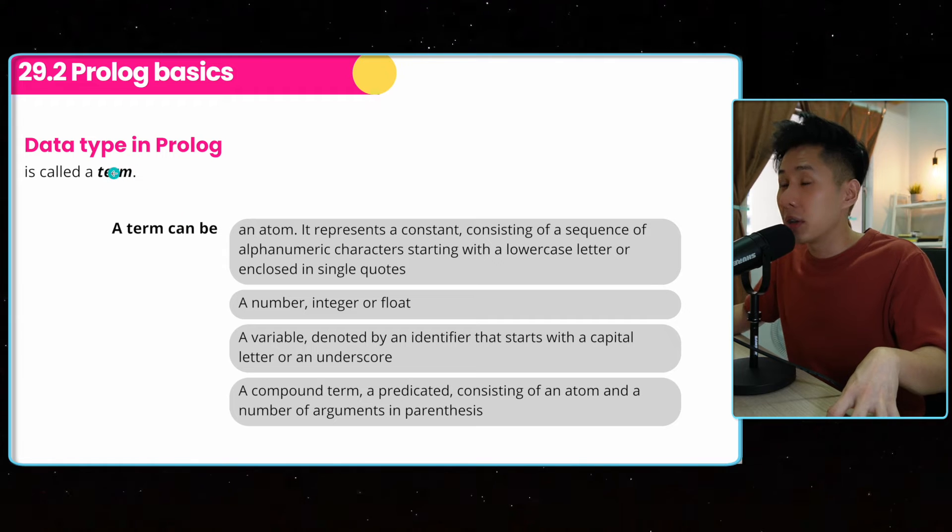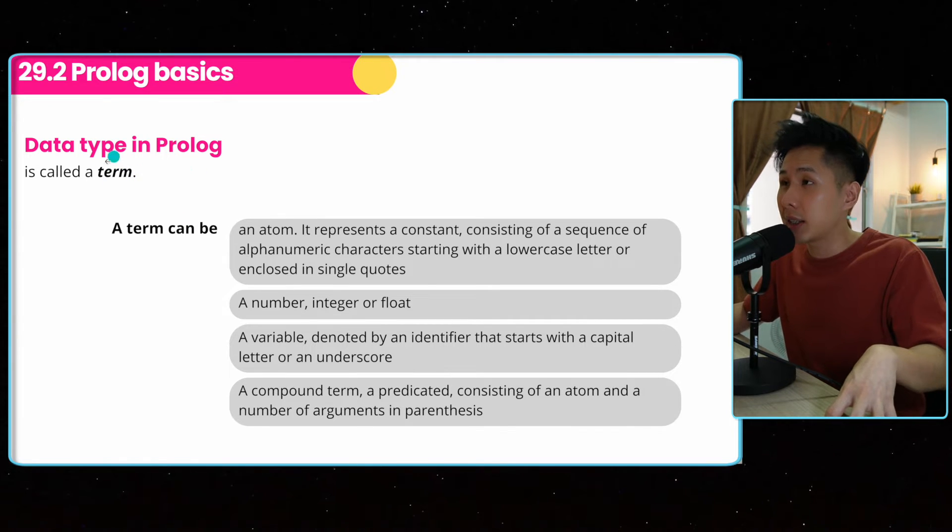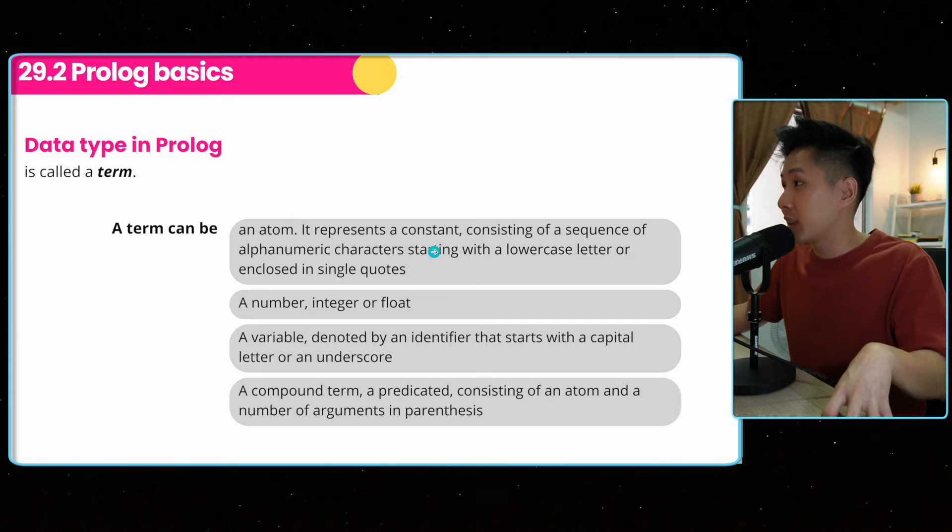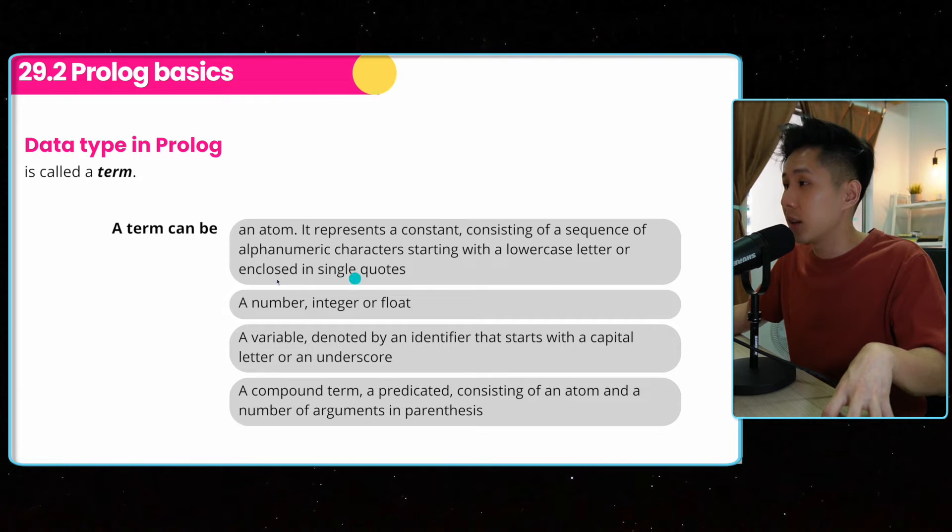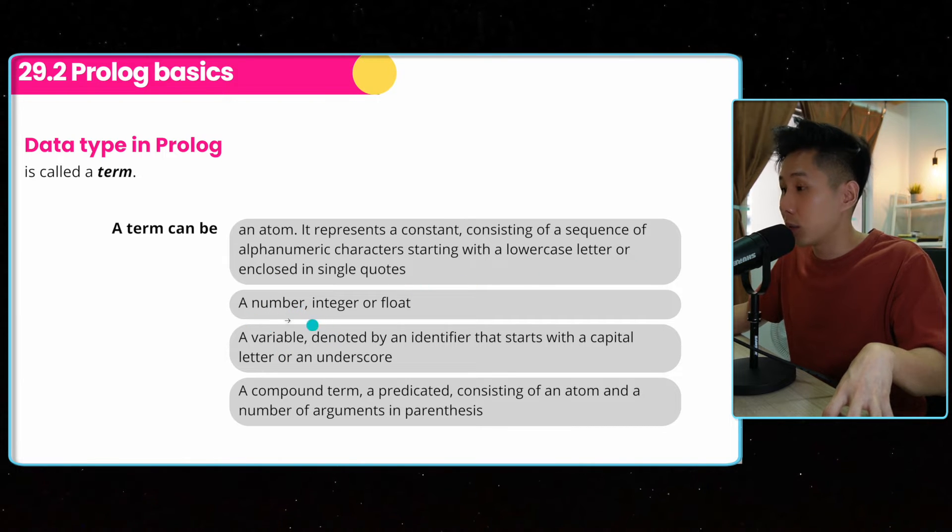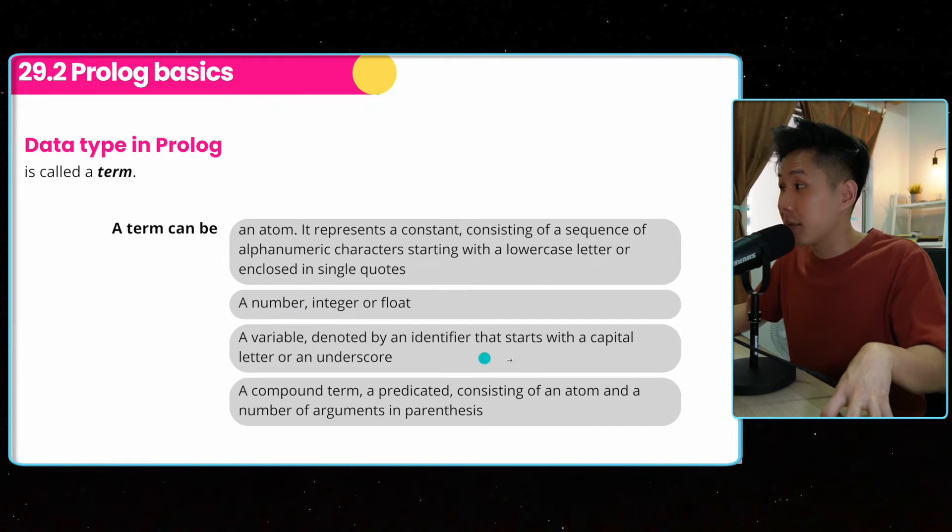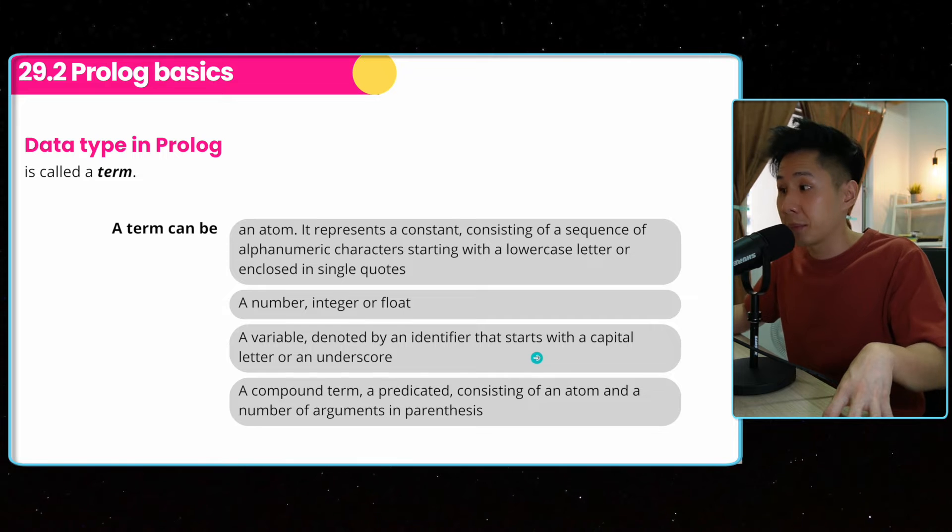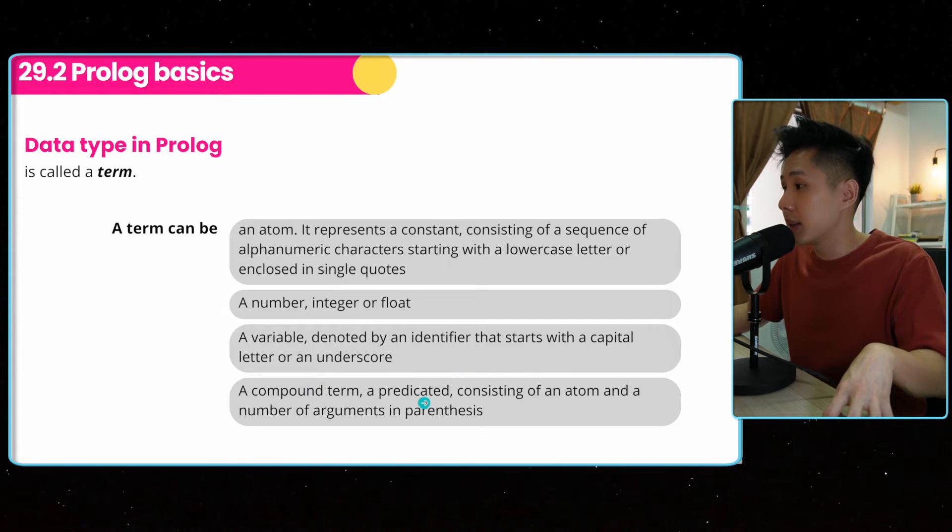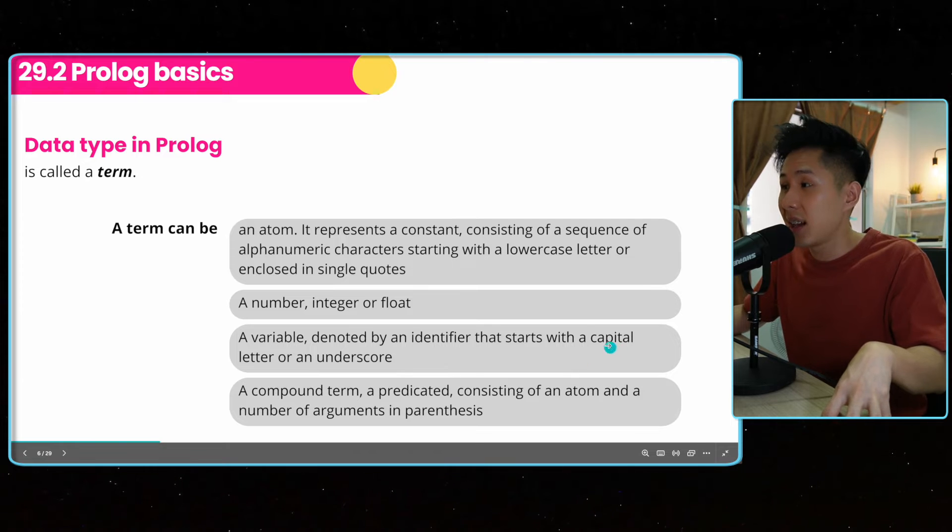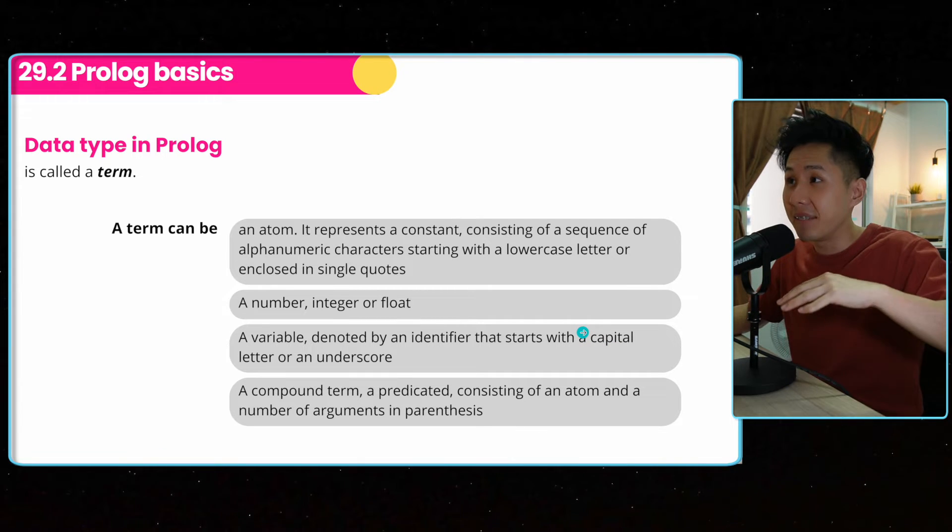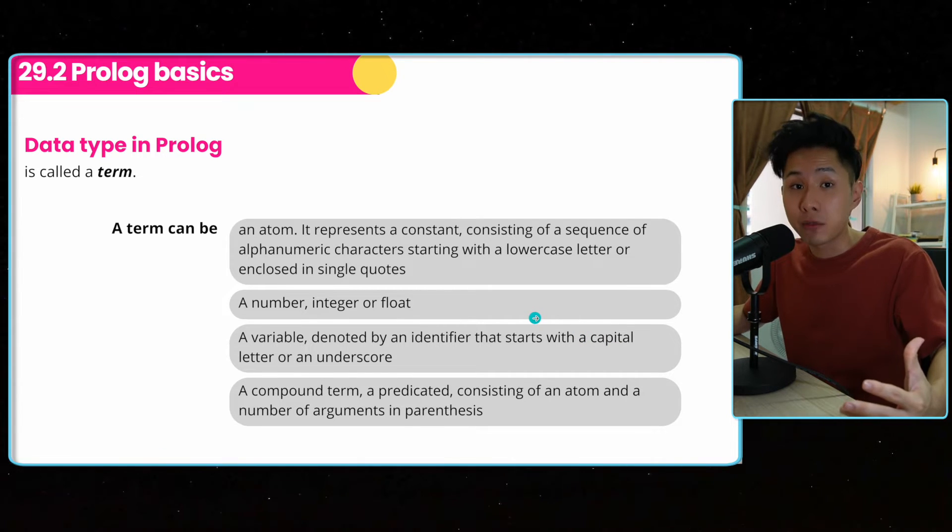Going back to how we define a clause, you usually need a head and also a body. And a full stop is required. If you don't have this, Prolog is going to give you a syntax error. And also, you need to know what are the data types. In Prolog, data type is called a term. And a term can be an atom. It represents a constant, consisting of a sequence of alphanumeric characters, starting with lowercase letter. It can also be number, also a variable, an identifier that starts with a capital letter. And also compound term, a predicate consisting of an atom and a number of arguments in parentheses. And throughout this video, you will see these terms appearing everywhere.